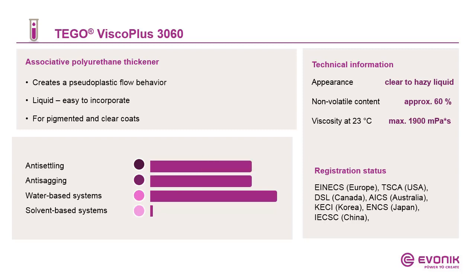The Tego VSCO Plus 3060 is also an associative polyurethane thickener — a clear to hazy liquid — but it creates a pseudoplastic flow behavior. As a liquid, it is easy to incorporate and suitable for pigmented and clear coating systems. It provides good anti-settling and anti-sagging properties and is highly recommended for water-based systems.